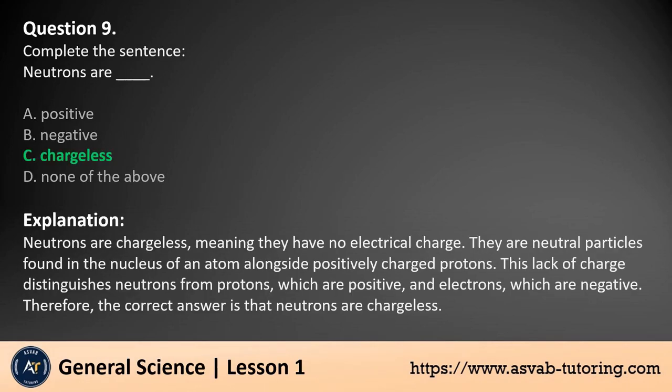Neutrons are chargeless, meaning they have no electrical charge. They are neutral particles found in the nucleus of an atom alongside positively charged protons. This lack of charge distinguishes neutrons from protons, which are positive, and electrons, which are negative. Therefore, the correct answer is that neutrons are chargeless.